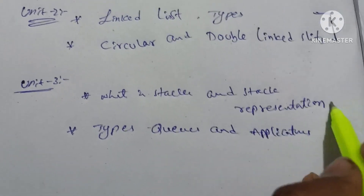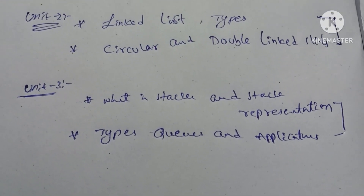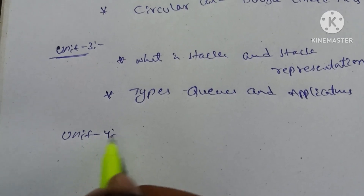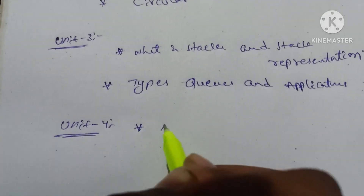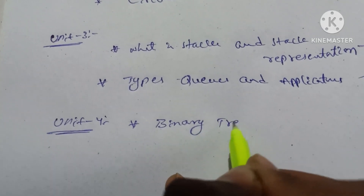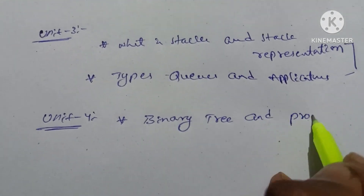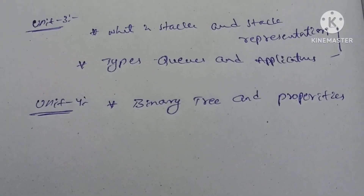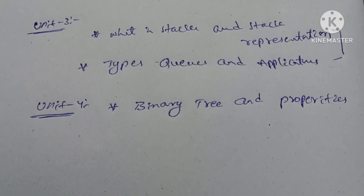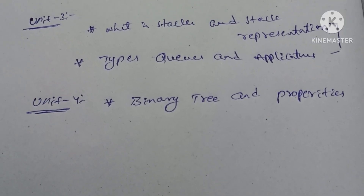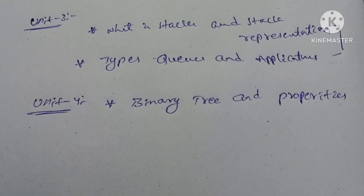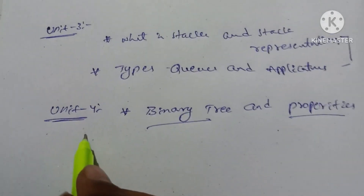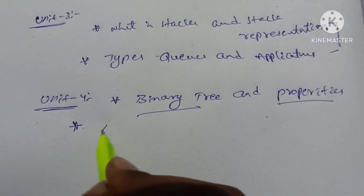If you want to study Unit 3, you can see the perfect answer. In the 2nd semester, let's do Unit 4. In Unit 4, the question is: what is binary tree and its properties? Let's also look at types of trees.